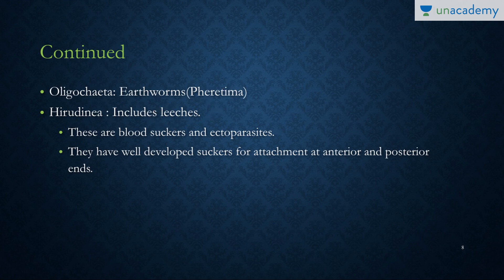Third, we have the Hirudinea, which includes all the blood-sucking leeches. These are ectoparasites and blood suckers, called sanguivorous — 'sangui' meaning blood and 'vorous' meaning eating. They have well-developed suckers for attachment at both the anterior and posterior ends, through which they can act as ectoparasites on organisms like cattle and humans.